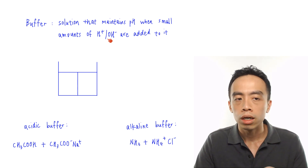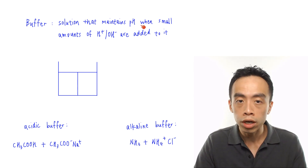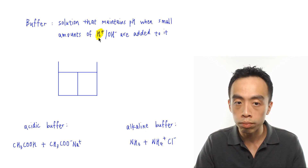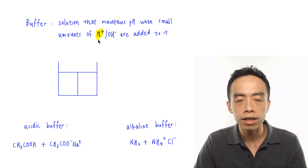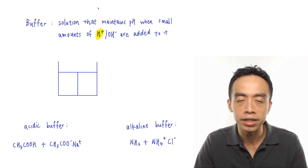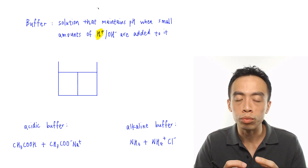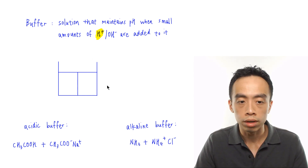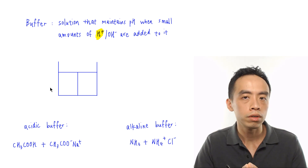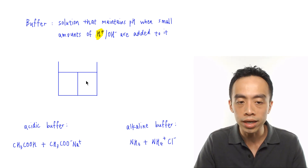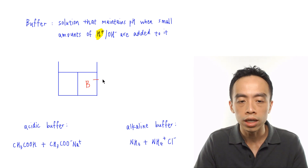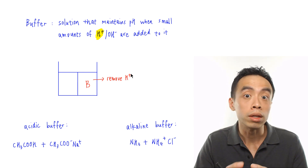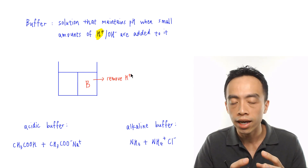If a buffer is a solution that maintains pH when a small amount of H+ is added to it, what this means is that inside this buffer there must be a base that can remove the H+. So inside this buffer solution there must be a base present, and the purpose of this base is to remove the H+, so it can maintain pH when H+ is added.